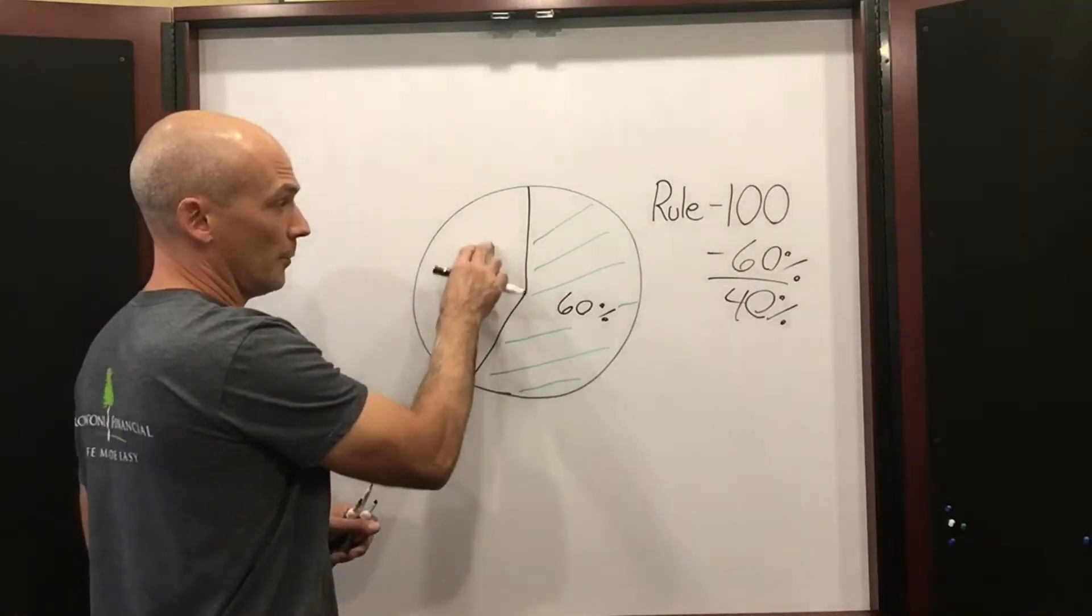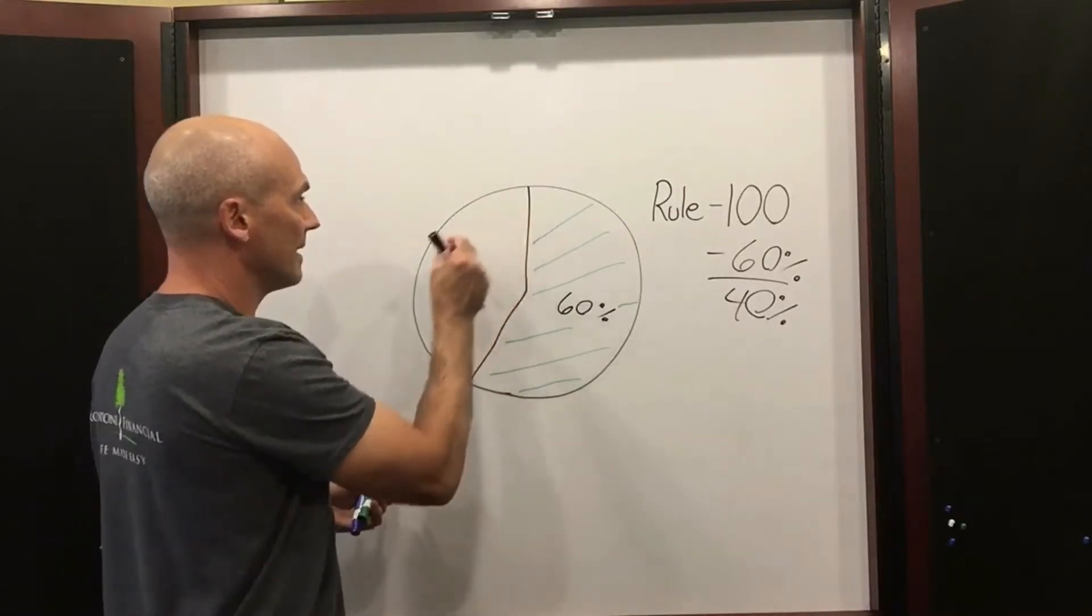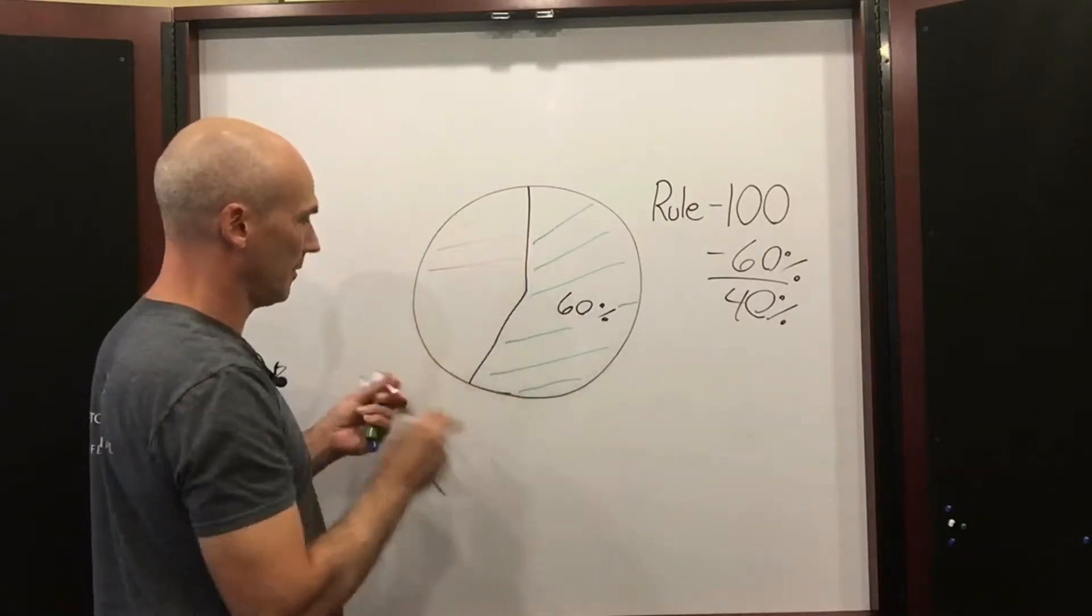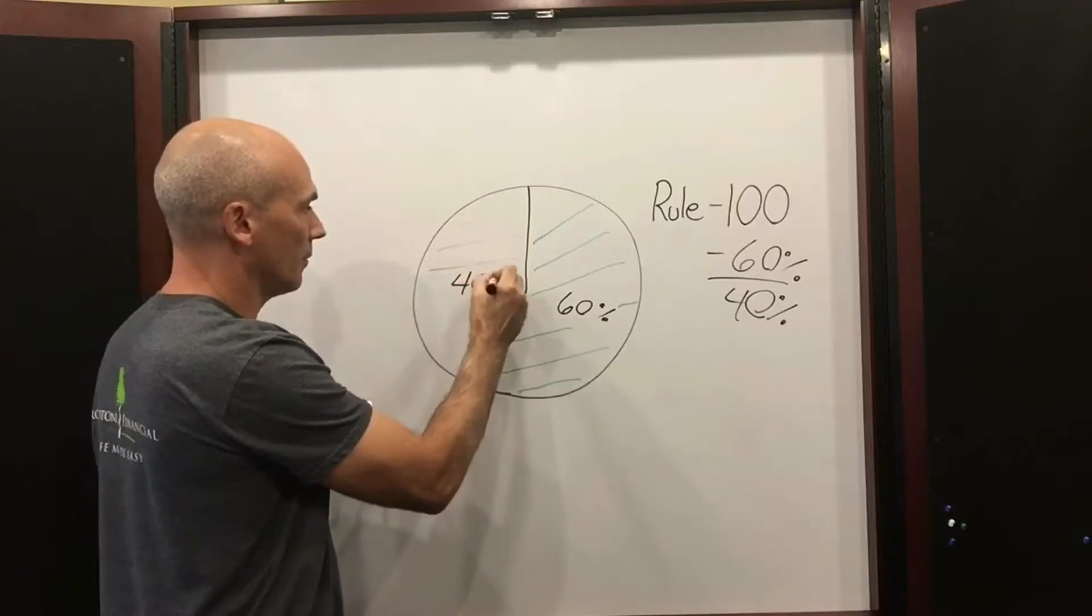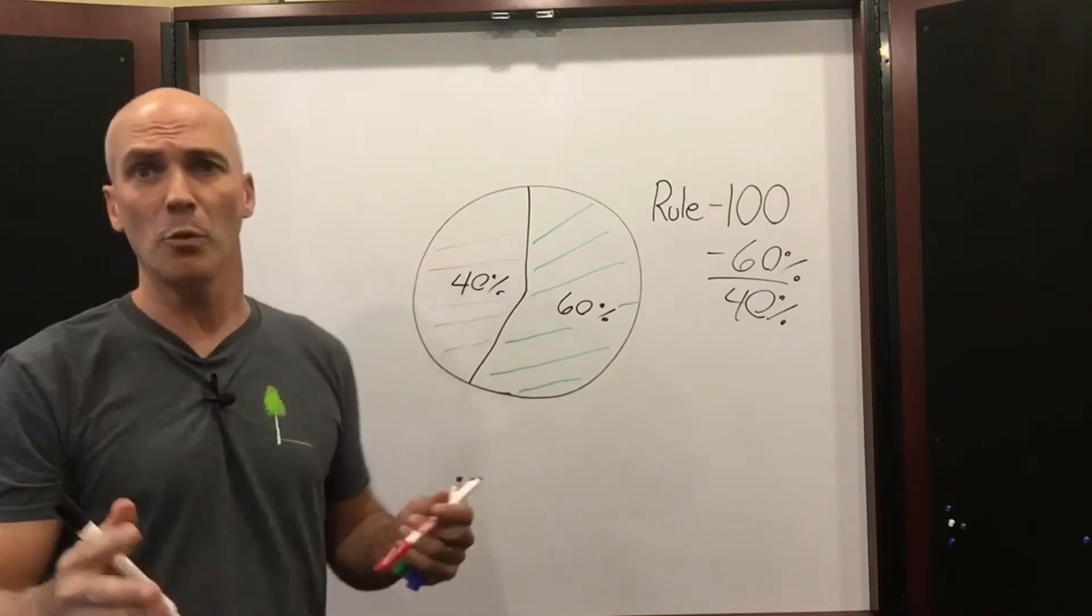So the other portion of the portfolio, the 40%, if we're going to take risk, that's where we're going to do it. We're going to do it with this 40% piece over here. All right, so that's the basics of Rule 100.